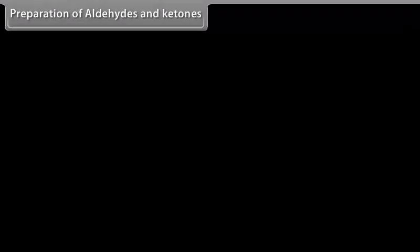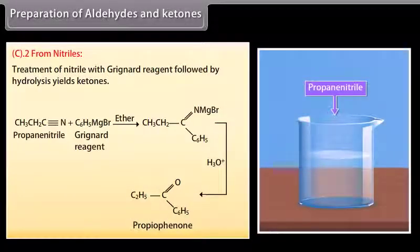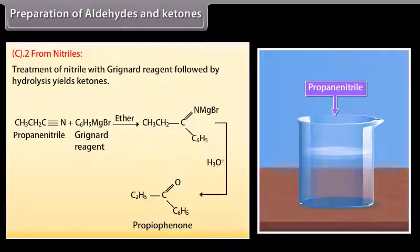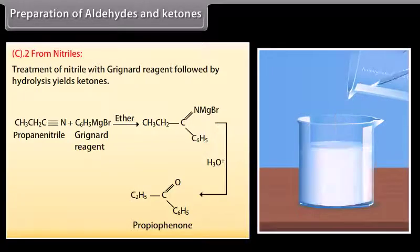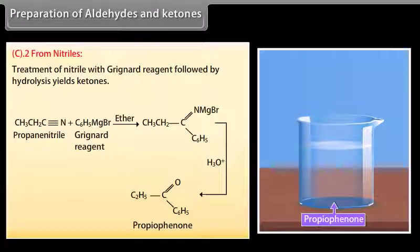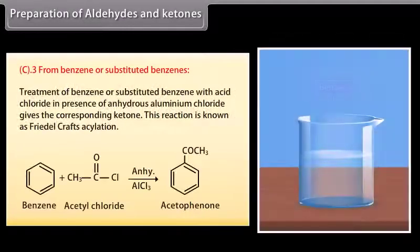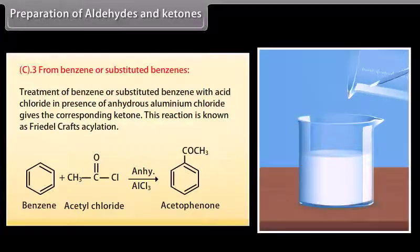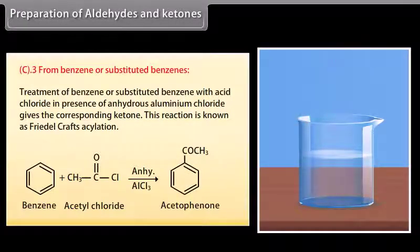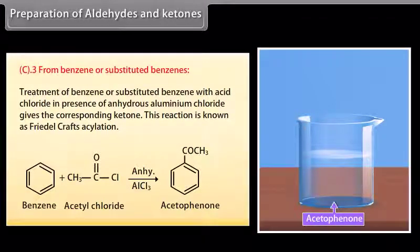From nitriles: treatment of a nitrile with a Grignard reagent followed by hydrolysis yields ketones. For example, a Grignard reagent in ether reacts with propanenitrile to form an intermediate that on hydrolysis gives propiophenone. From benzene or substituted benzenes: treatment with an acid chloride in the presence of anhydrous aluminium chloride gives the corresponding ketone — this reaction is known as Friedel-Crafts acylation.